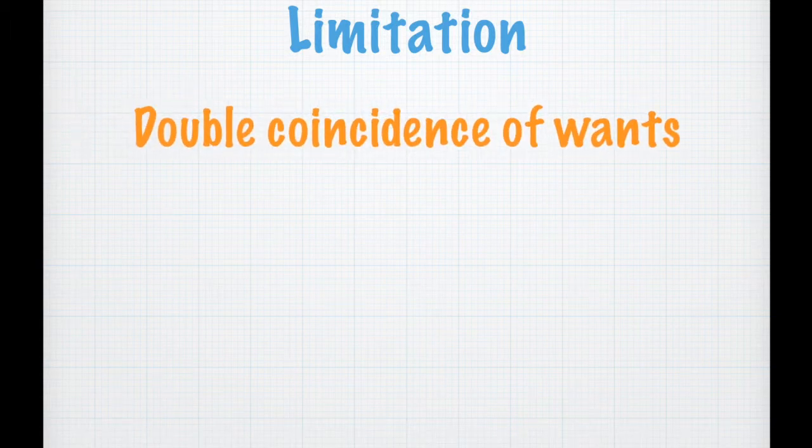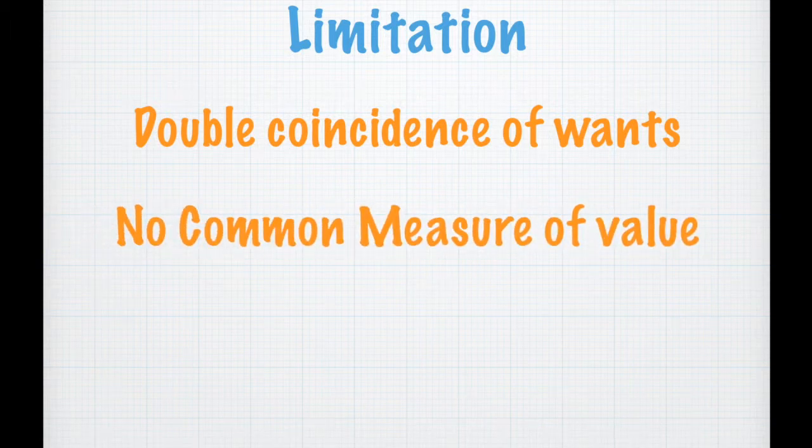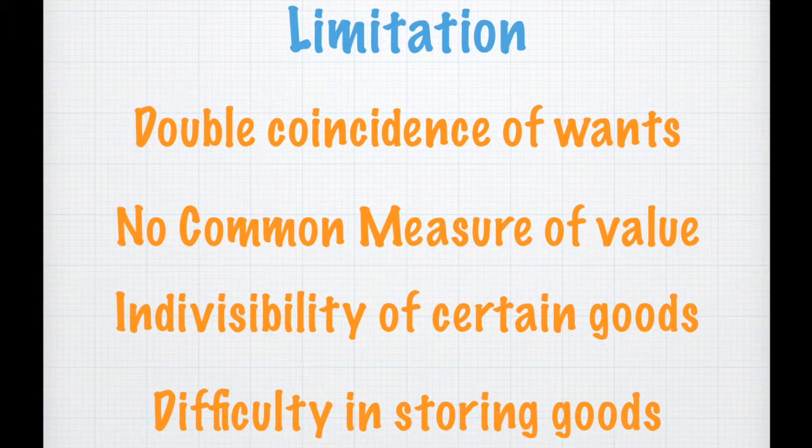However, limits are both sides need to have what the other wants. The trade ratio will not be accepted by everyone. And many goods cannot be divided to fit small business. Last but not least, goods are harder than money to be stored.